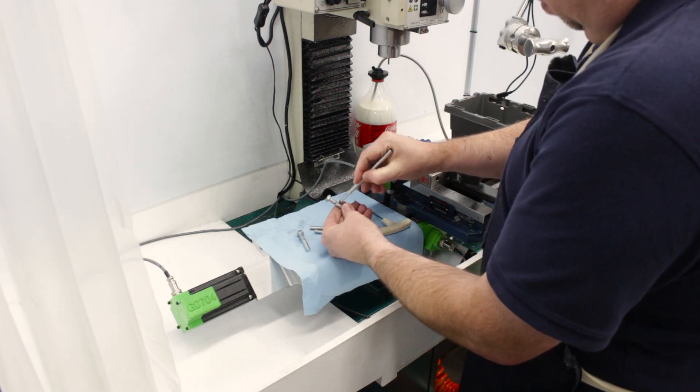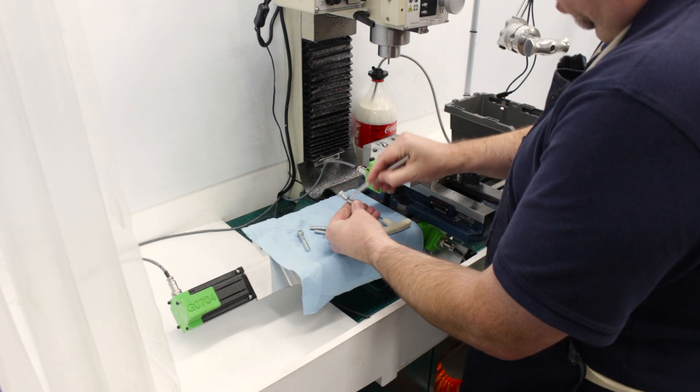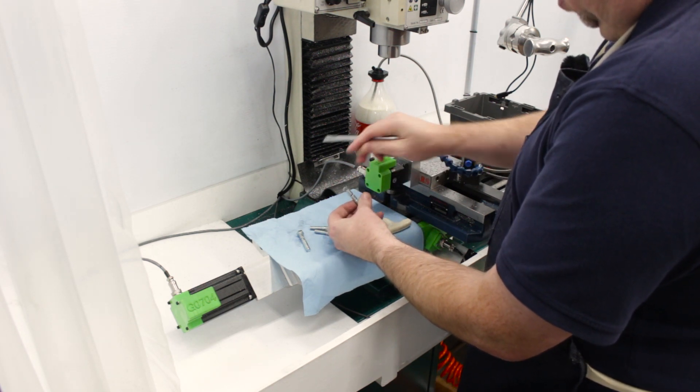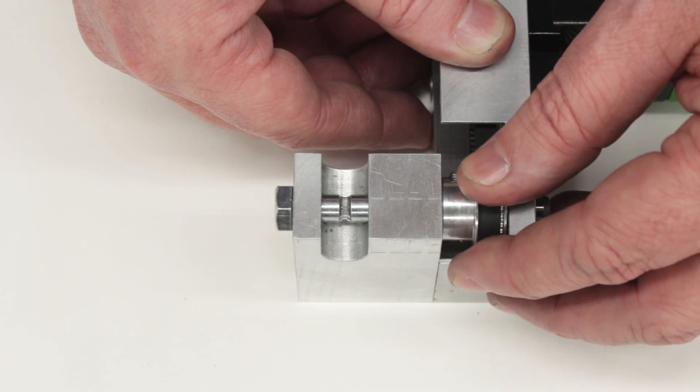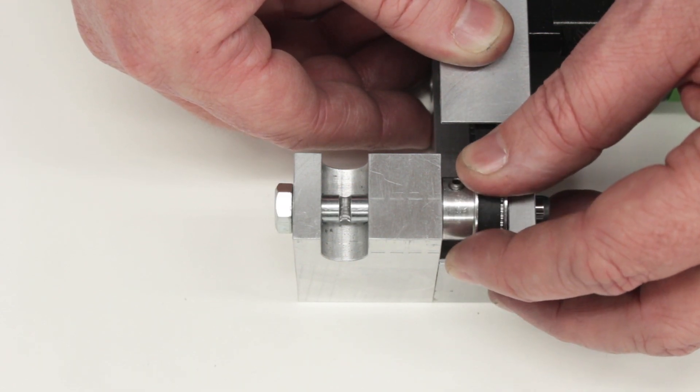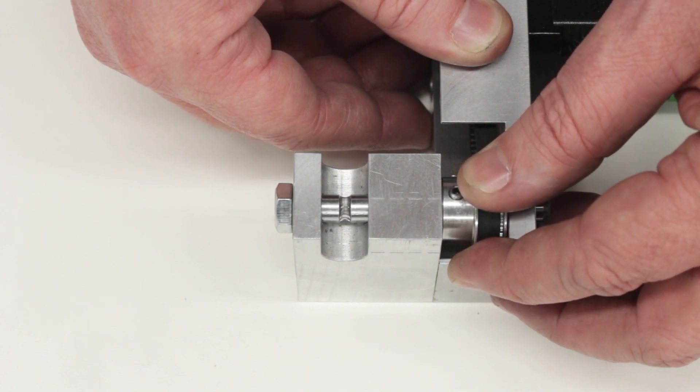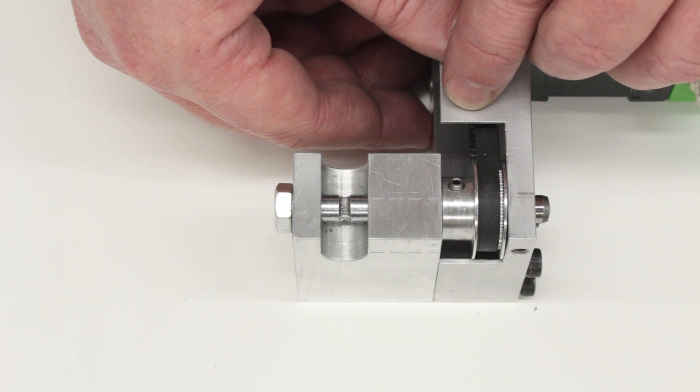And we do this for every single hobbed bolt that we make, again, because the consequences of getting a chip down into a nozzle are just, we don't want to do that. I know the features on these bolts are really small and very difficult to see. This is about as far as I can zoom in with this particular camera. Let's go over to the microscope and take a look at the teeth up close so you can see exactly what's going on here.